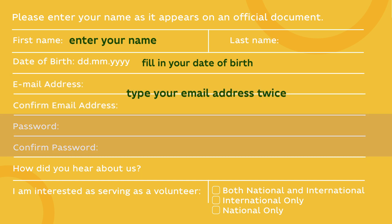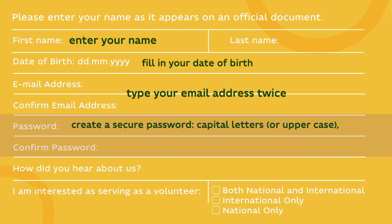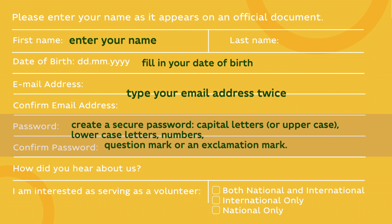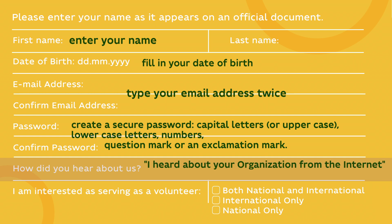The lines Password and Confirm Password require you to make up a password for your account on the website. Remember that it is highly important to create a secure password which has capital letters or uppercase, lowercase letters, numbers and special signs such as a question mark or an exclamation mark. When you fill in your details, you'll have to answer the question: how did you hear about us? You can simply write 'I heard about your organization from the internet' or 'my friend is serving as a volunteer' and so on.